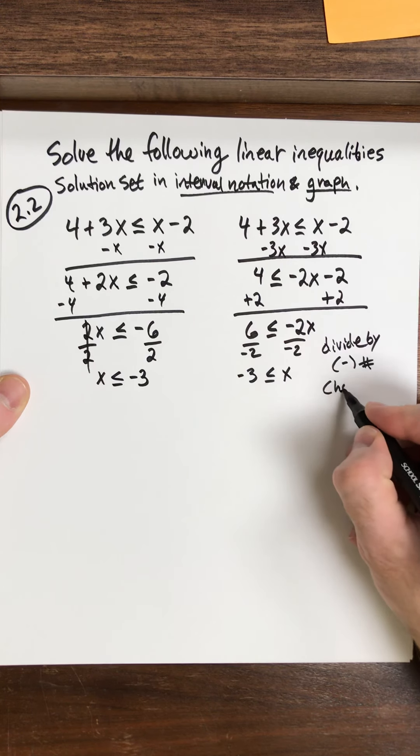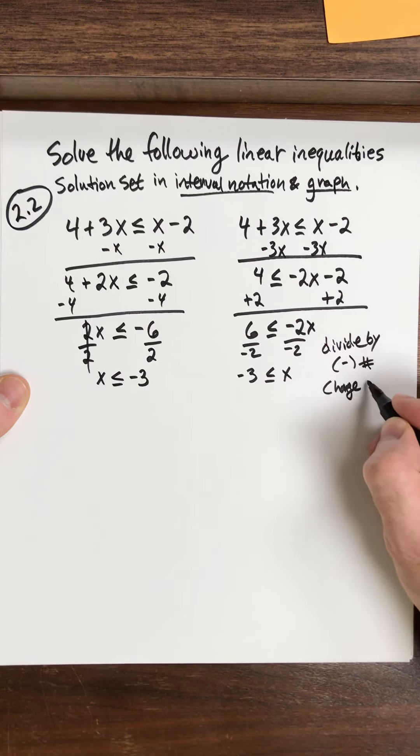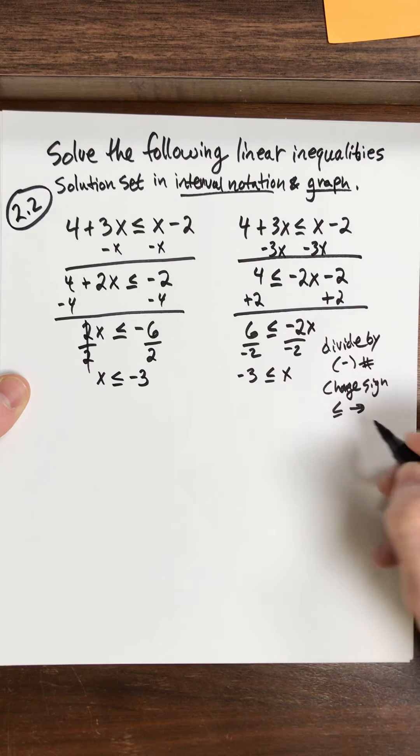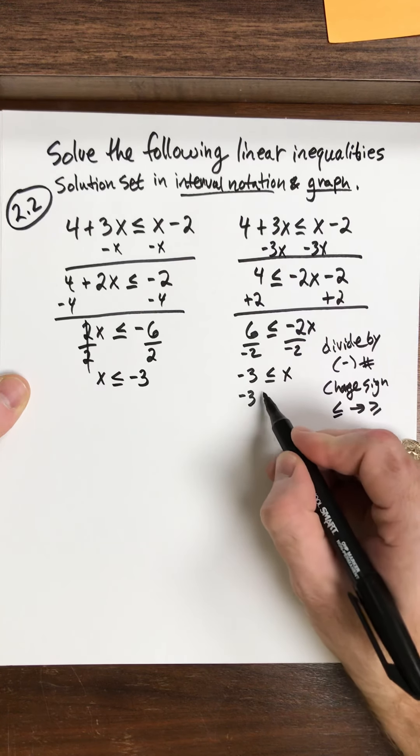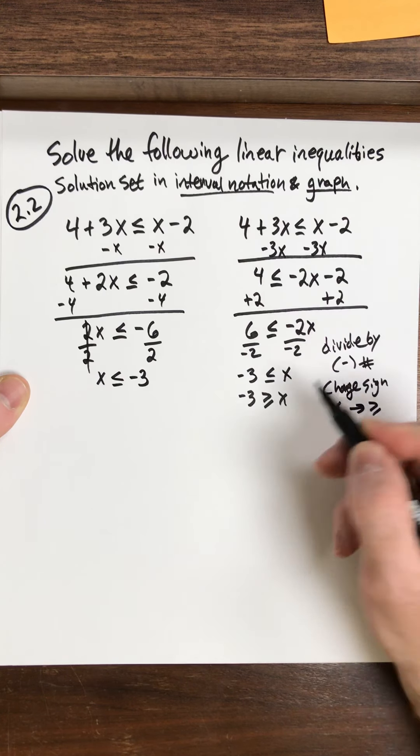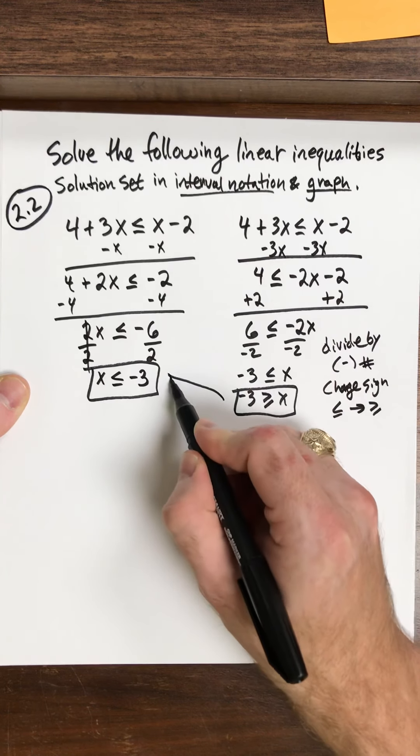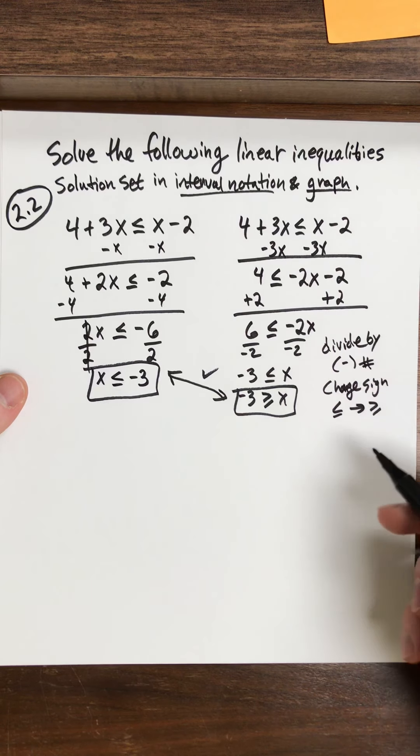All right, change the sign. So we go from less than or equal to to greater than or equal to. So I have negative 3 is greater than or equal to x. Now this is the same as what I got here. So these are the same. Okay, now why does that work like that?